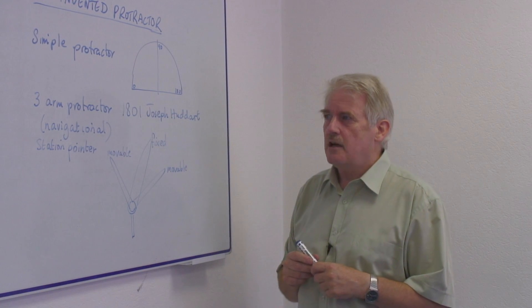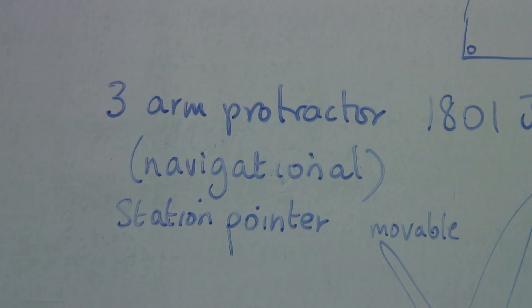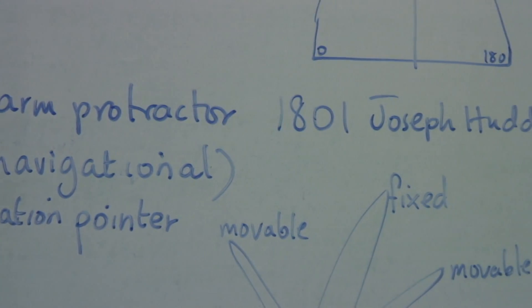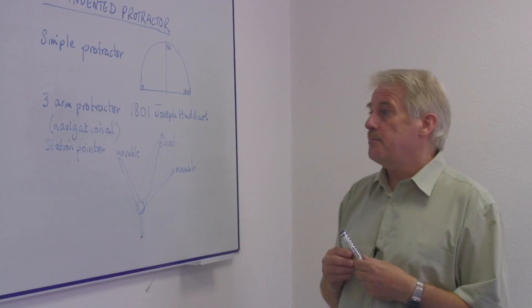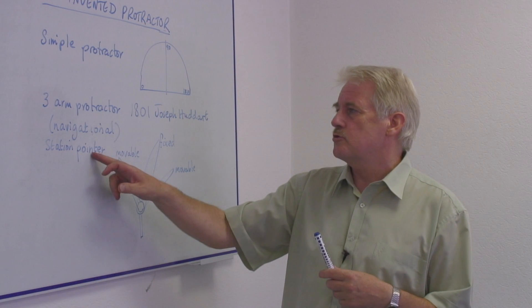There are specific types of protractor, however, which are not so obscure. And this one in 1801 by a gentleman called Joseph Huddart, who was the captain of an American ship, was used for navigation and it was also called a station pointer.